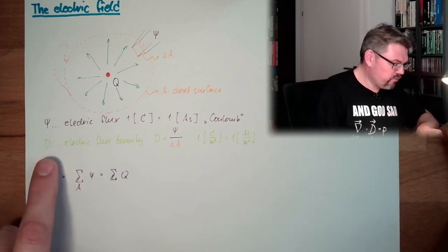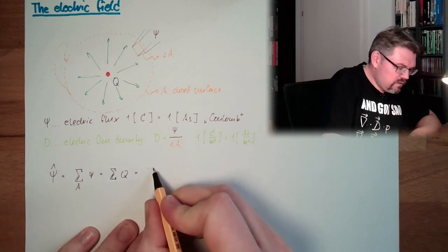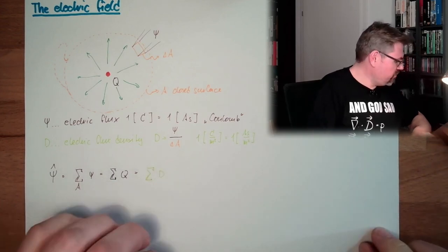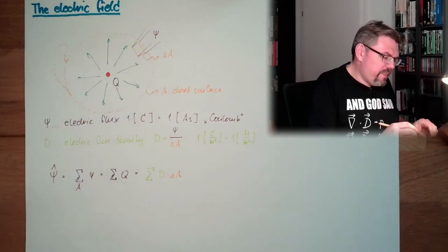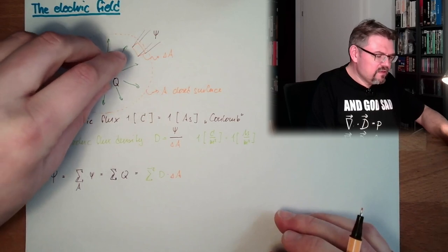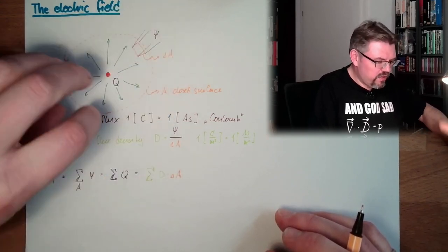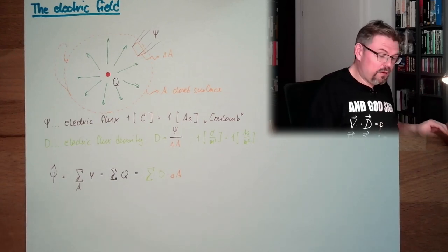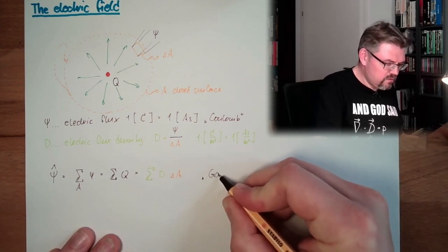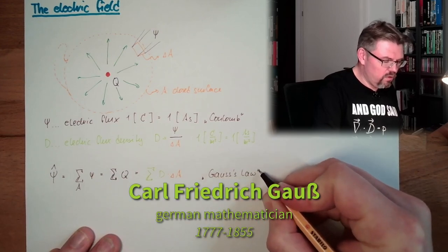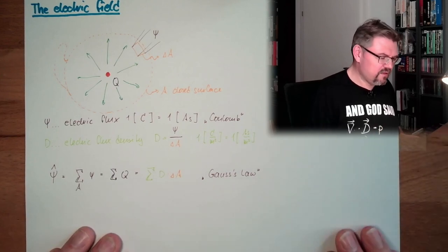And so here we have one Coulomb per square meter, or one Ampere second per square meter. That's for the electric flux. And if you want to write it with this flux density, then you have to write this equals the sum of the flux density multiplied delta A. So you're separating this closed surface, or substituting this closed surface with a lot of small delta A's, and you summarize all those flows through these little windows. And then it's the sum of all fears, the sum of all charges. This here is called Gauss's law in English.